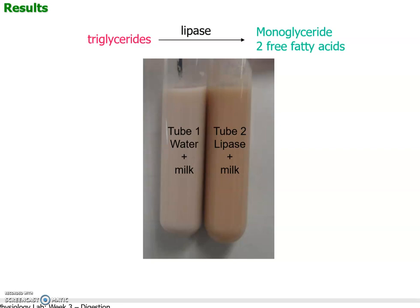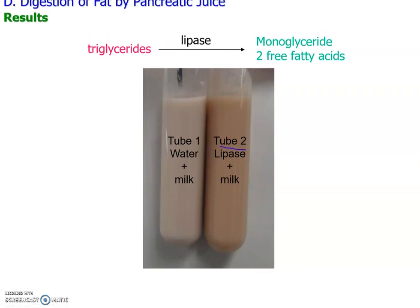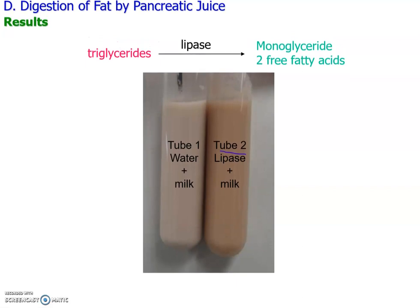Here's a slide showing the expected results. Test tube number 1 had water, evaporated milk, and no enzyme — it appears more bluish. Test tube number 2 had the lipase in pancreatic juice, so the fat was digested: the triglycerides were broken down to glycerol and free fatty acids were released, dropping the pH enough to shift the litmus color visibly to pinkish. The color change confirms the release of fatty acids.